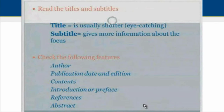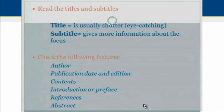It is also necessary to read about the publication date and edition, because if we read the first edition when a second one exists, it means there are changes in the book that we would miss. In the case of contents, this is a list of the main chapters or sections and should tell you how much space is given to the topic you are researching. An introduction describes how the text is organized. References will provide additional suggestions for further reading.